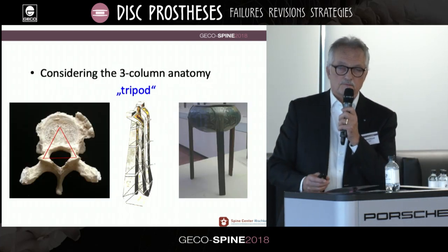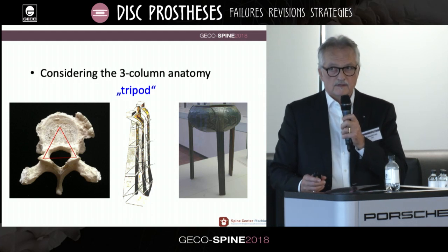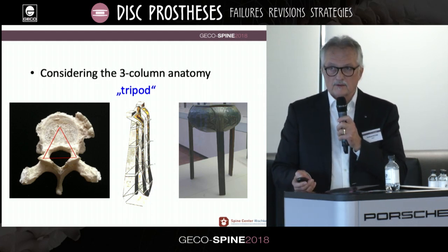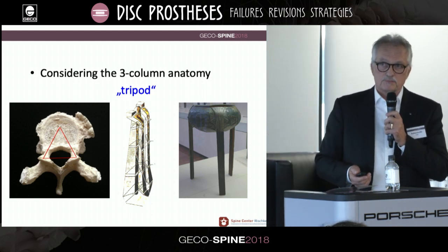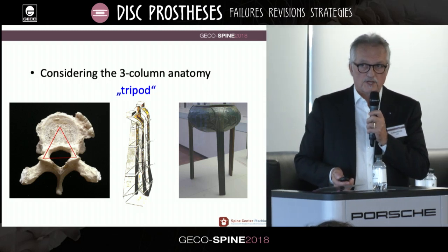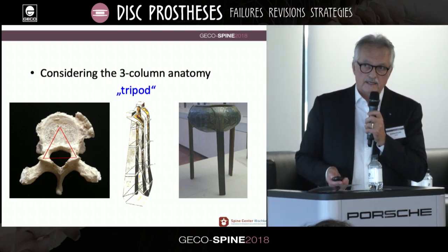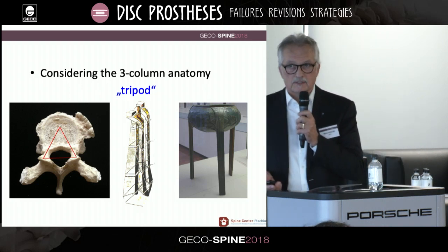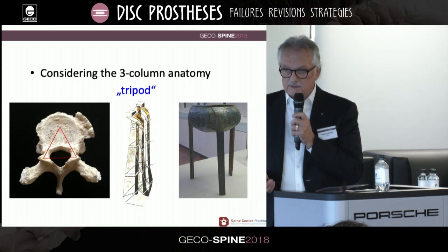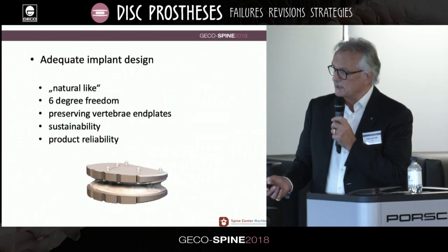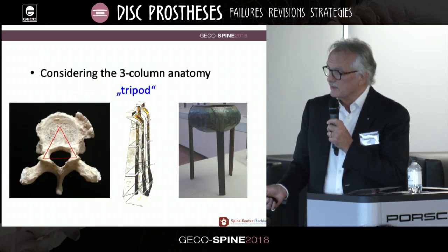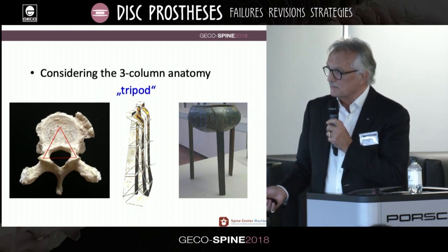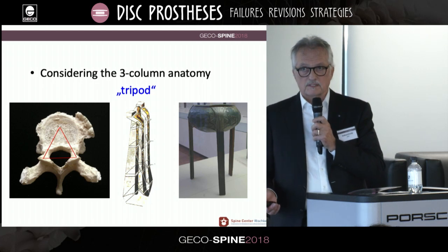What about the three-column anatomy — the tripod? If you imagine a tripod, if you cut one leg, the chair will be broken and crash down. Therefore, we have a triangular situation with the anterior column and the two posterior columns. So, that we have to observe.